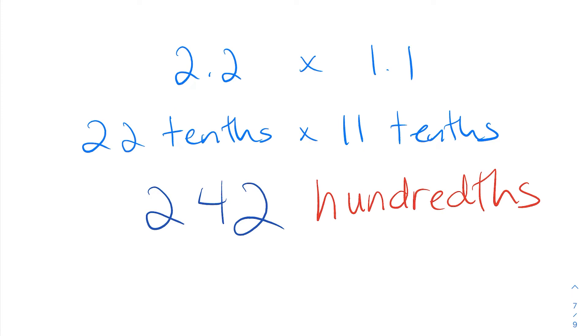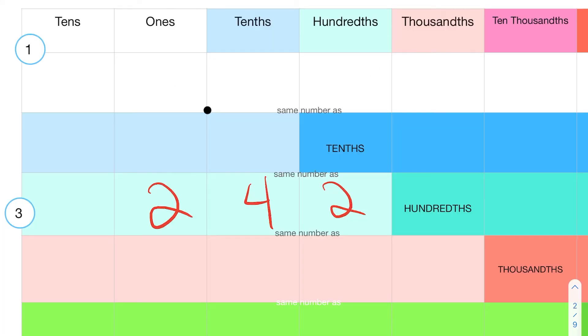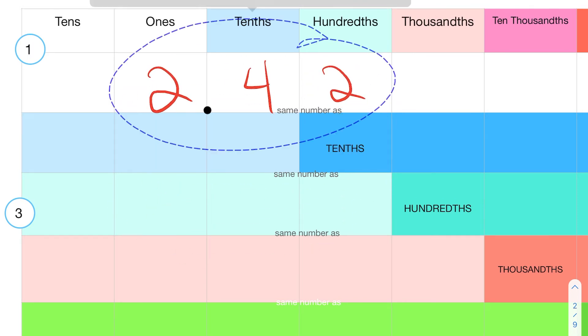If you take a look at our answer, 242 hundredths is the same as saying 2.42. In a previous video I was able to show you a chart, a placemat that I used to use, and let's see how this works. So we've got 242 hundredths and it's the same as moving up to 2.42. And that's how you get the decimal placement because you are multiplying the place values. Now let's do two more examples and we'll wrap this up.